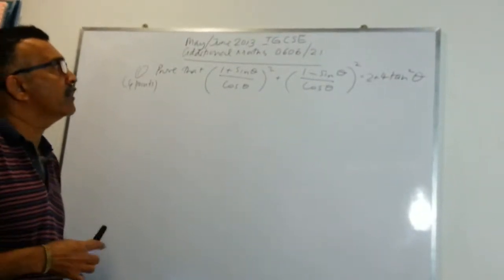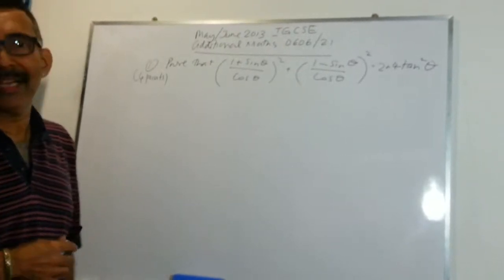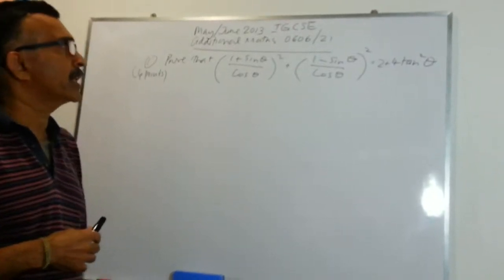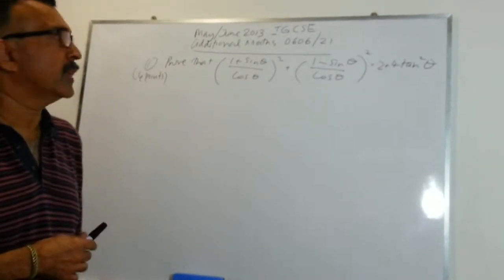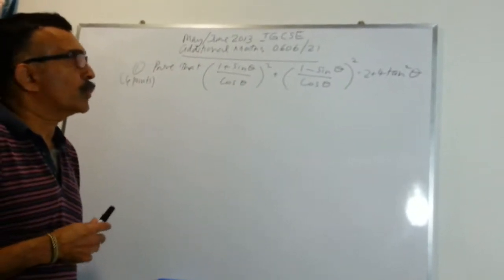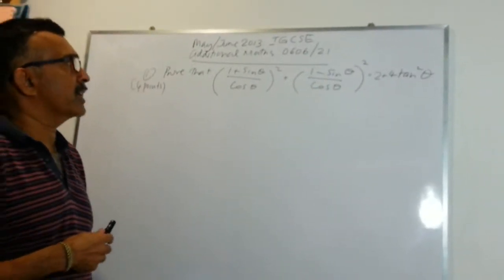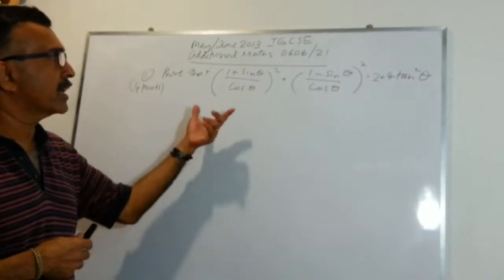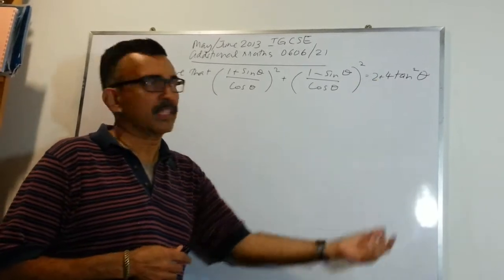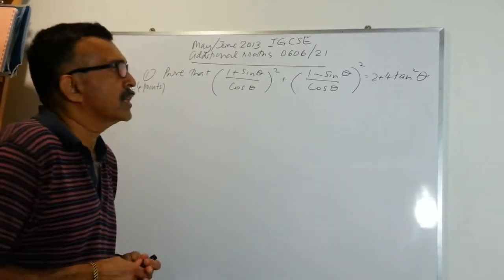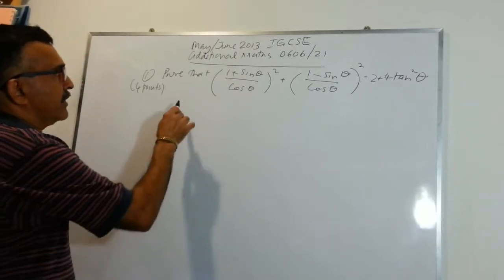This is question number 1 from the May-June 2013 IGCSE Additional Mathematics paper, subject code 0606/21. We are asked to prove an identity. The left-hand side is given as ((1 + sinθ)/cosθ)² + ((1 − sinθ)/cosθ)² equals 2 + 4tan²θ. So this is an identity we are trying to prove, and let's start with the left-hand side.